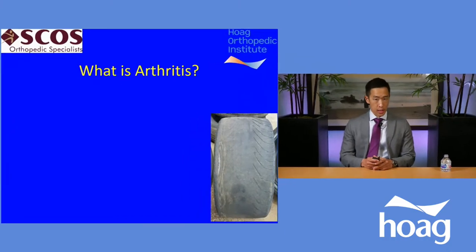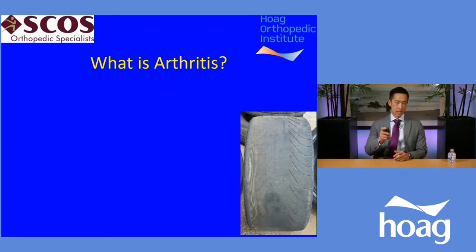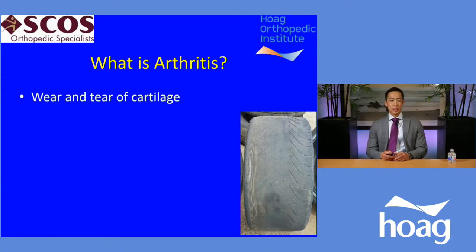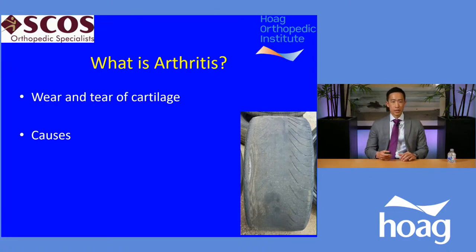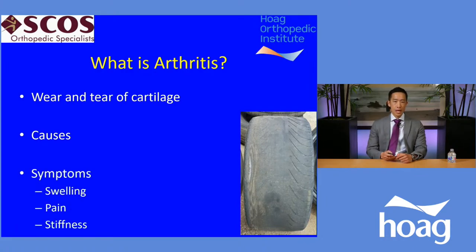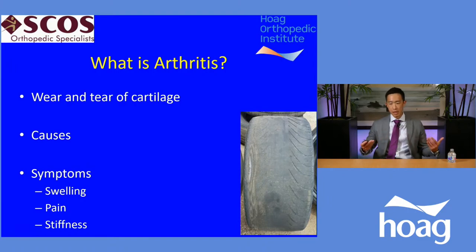Arthritis is a very common issue I see in practice. Like a worn-out tire, it's the wear and tear of the cartilage in that ball and socket joint. It's usually caused by a combination of factors — genetics, activity level, prior injury, and weight — that over time contribute to cartilage wear. Symptoms most people with hip arthritis experience include swelling, pain, stiffness preventing them from putting on socks or shoes, and pain that limits walking — patients say they walk half a block and have to stop because the hip hurts.